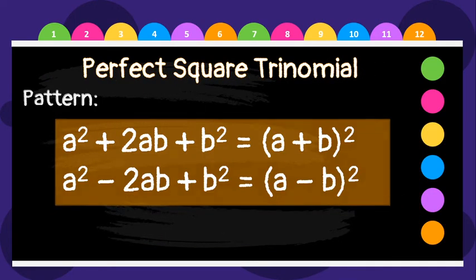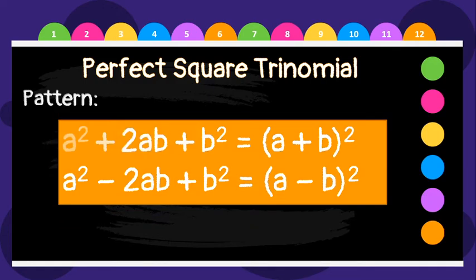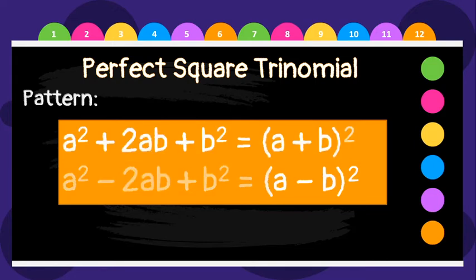Here is the pattern for the perfect square trinomial: a squared plus 2ab plus b squared is equal to the quantity of a plus b, squared. And a squared minus 2ab plus b squared is equal to the quantity of a minus b, squared.